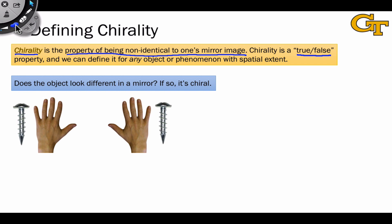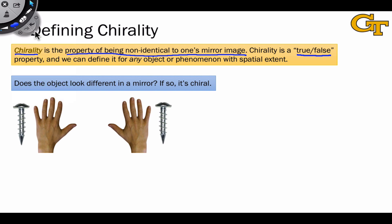Another way to phrase this question, is the molecule identical to its mirror image or not, is to ask the question, does the object look different in a mirror? If so, the object is chiral, and two examples of chiral objects are shown here.